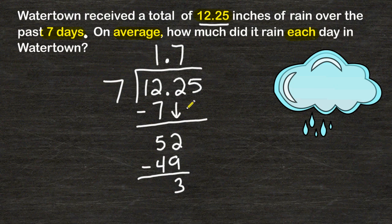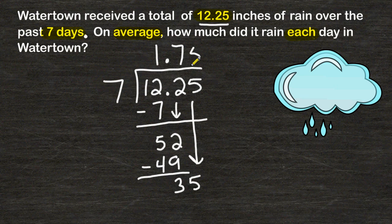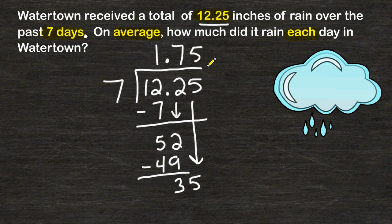We drop our next digit down, giving us 35. We divide 7 into 35, and 7 fits into 35 exactly 5 times. Five times 7 is 35, leaving a remainder of 0, so we stop here. The answer is 1.75 inches — or 1 and 3 quarters inches — of rain per day over that 7-day span.